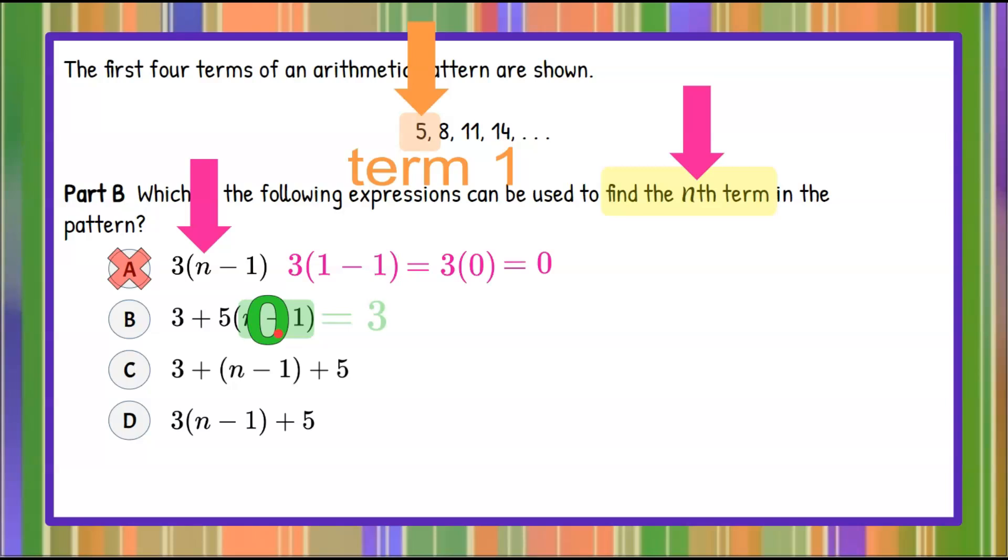So 3 plus 0 is 3. That is not term 1. So it cannot be choice B.